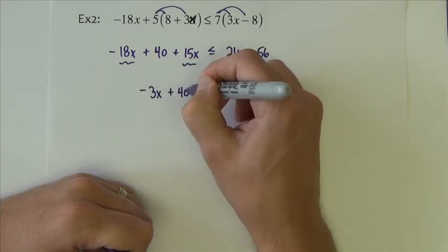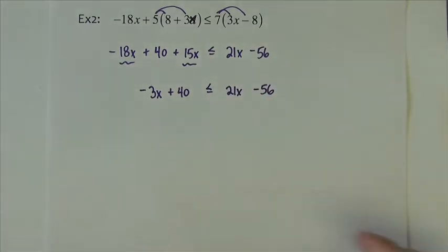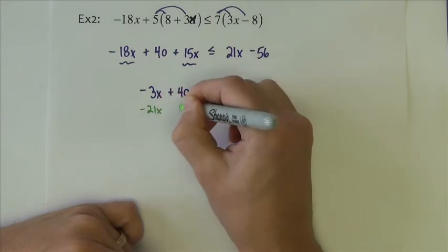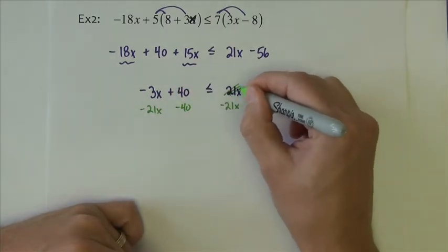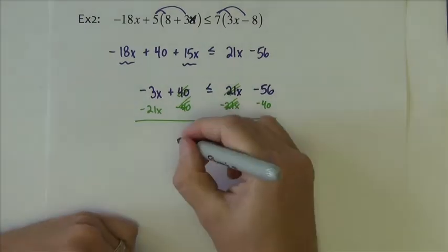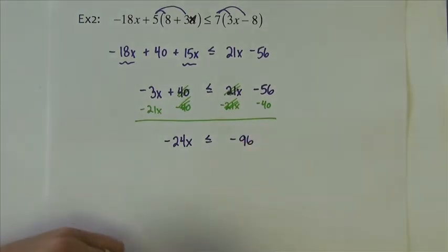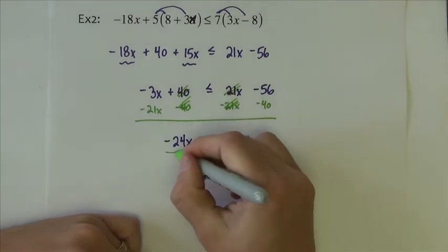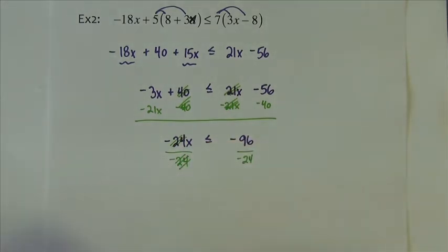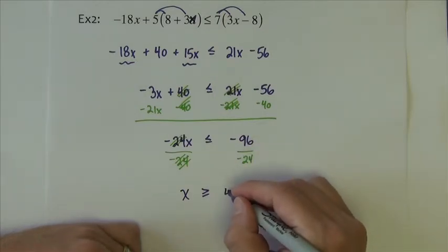So now I'm going to move the 21x to the left. I'm going to move the 40 to the right. The result is that I have negative 24x is less than or equal to negative 96. If I divide by negative 24, so I get x all by itself. Because I divide it by a negative, the inequality flips. And then 96 divided by 24 is 4. So I want x is greater than or equal to 4.